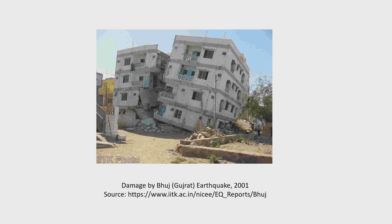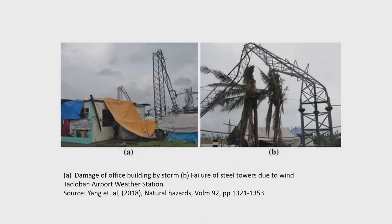One example is the damage to buildings during the Bhuj earthquake in 2001. Wind-induced vibration of structures can also be seen: the left-hand picture shows an office building damaged by a storm, and there is also the failure of steel towers at an airport in the Philippines.